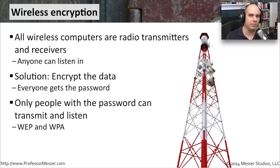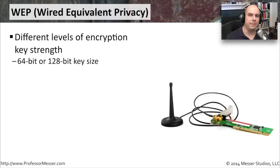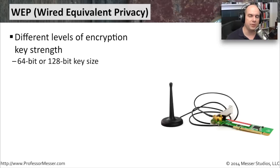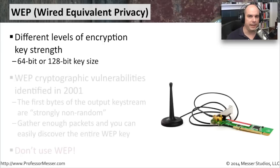We've applied two different kinds of encryption technologies through the years: one called WEP and the other called WPA. WEP, or Wired Equivalent Privacy, was introduced alongside 802.11 networking and used two different levels of encryption — either a 64-bit key or a 128-bit key, depending on where you were in the world.